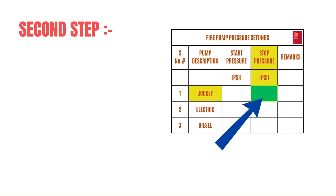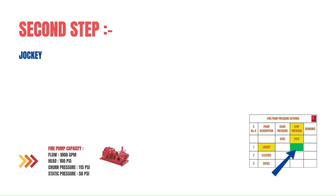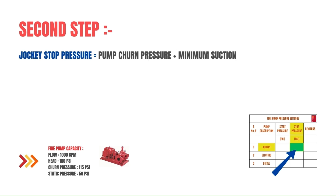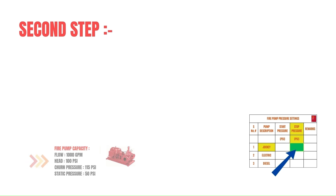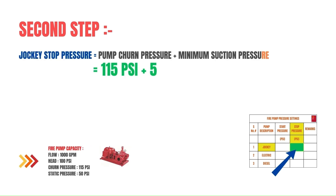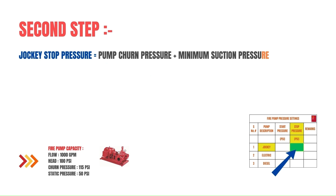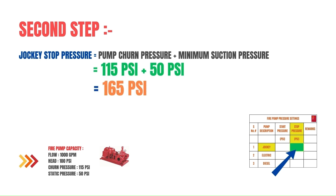Moving on to the second step, we need to determine the jockey stop pressure. The jockey stop pressure should equal the fire pump churn pressure plus the minimum static suction supply pressure. Using our data: 115 psi plus 50 psi gives us 165 psi.